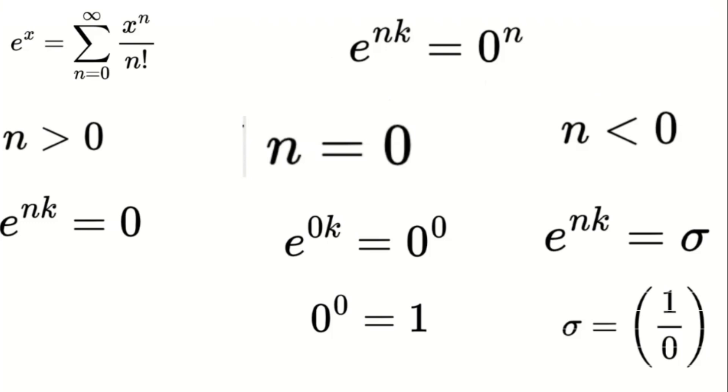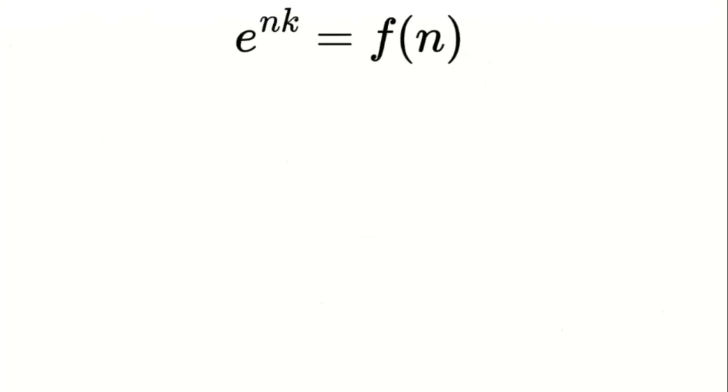This crucial observation tells us that e to the power of k is not a single fixed value. Instead, it's more like a function that depends on the exponent n. Therefore, we redefine singularity exponentiation as e to the power of nk equals f of n, where f of n is a function that depends on the sign of the exponent n. It takes on different values depending on whether n is positive, 0, or negative.